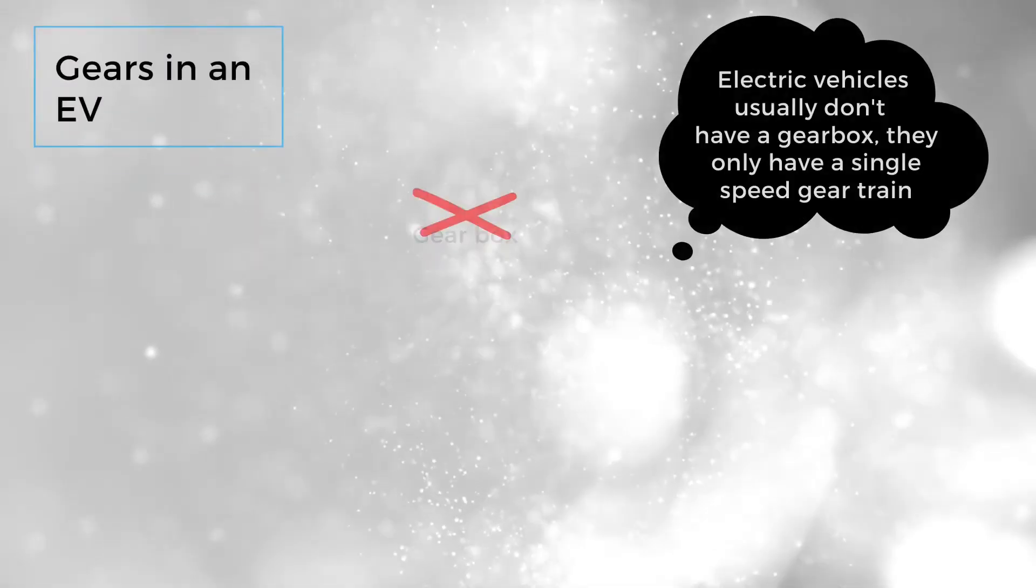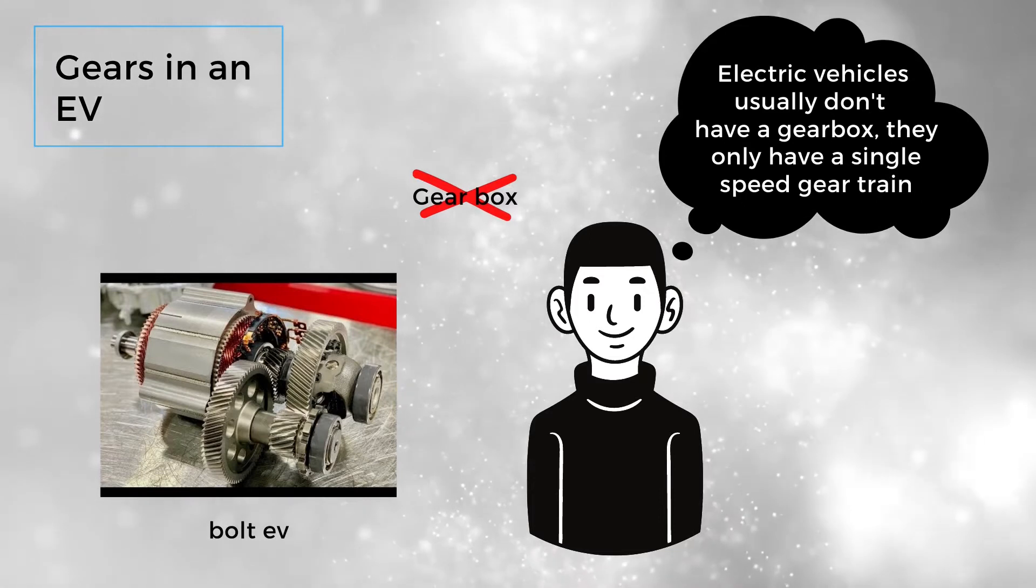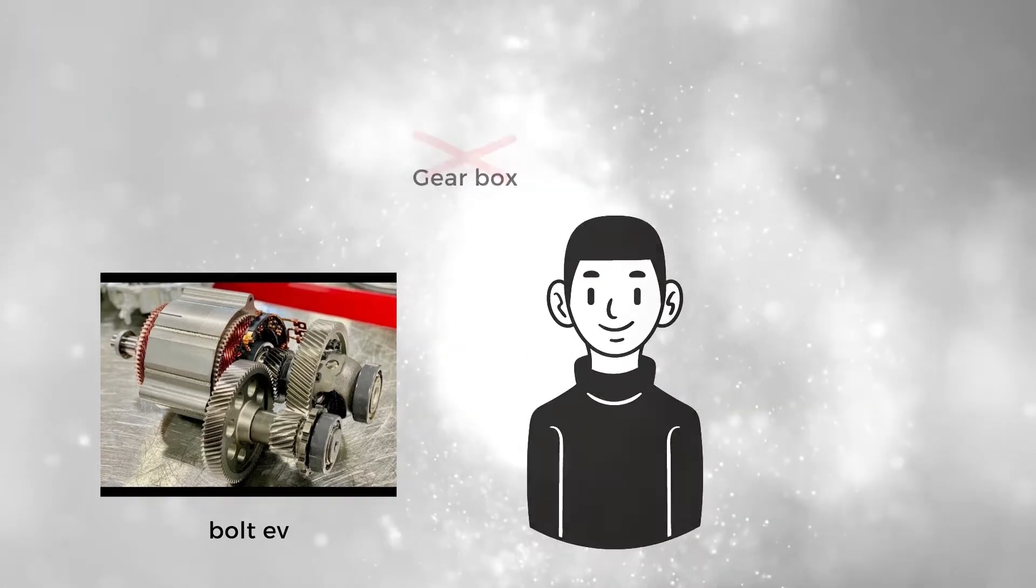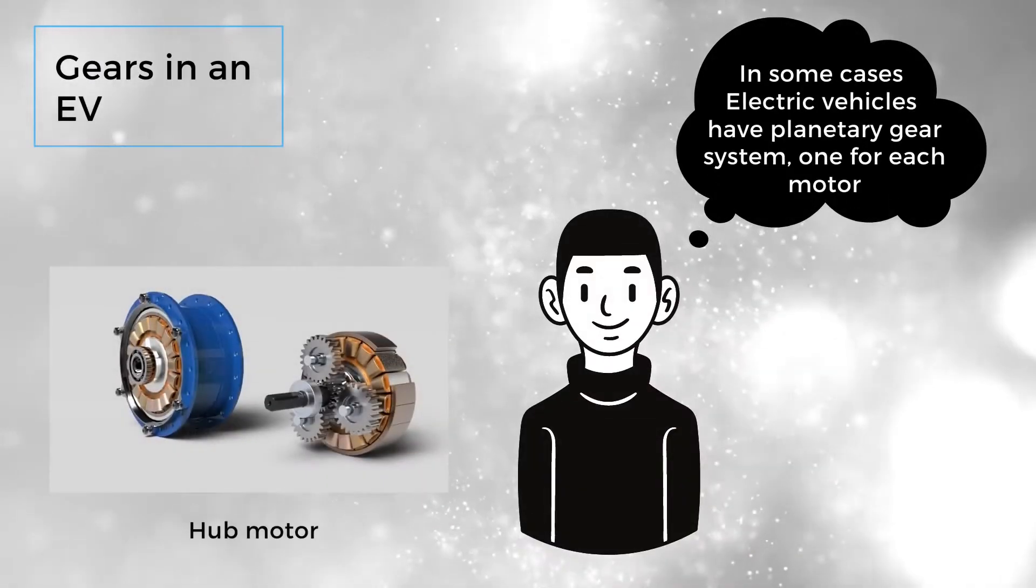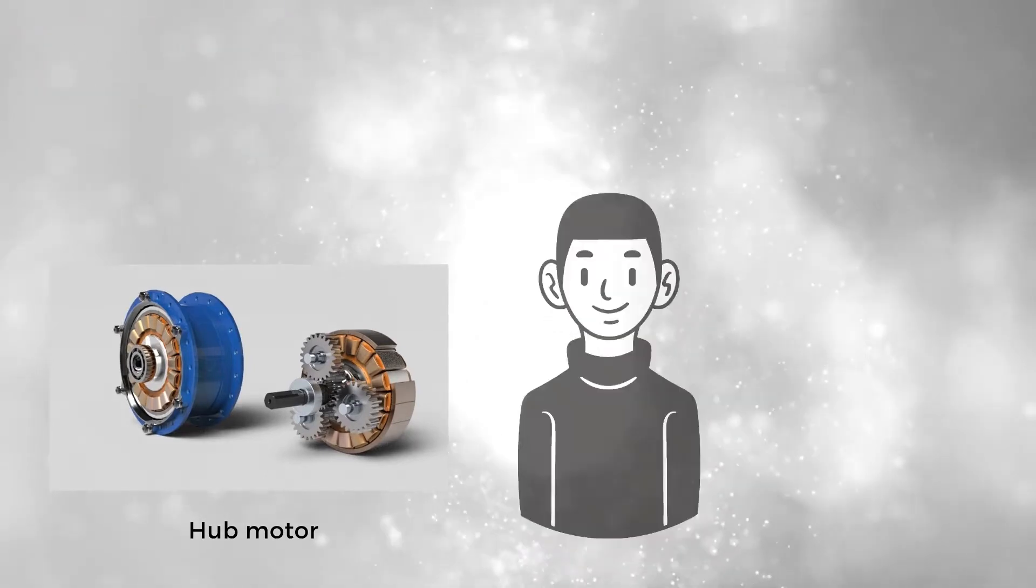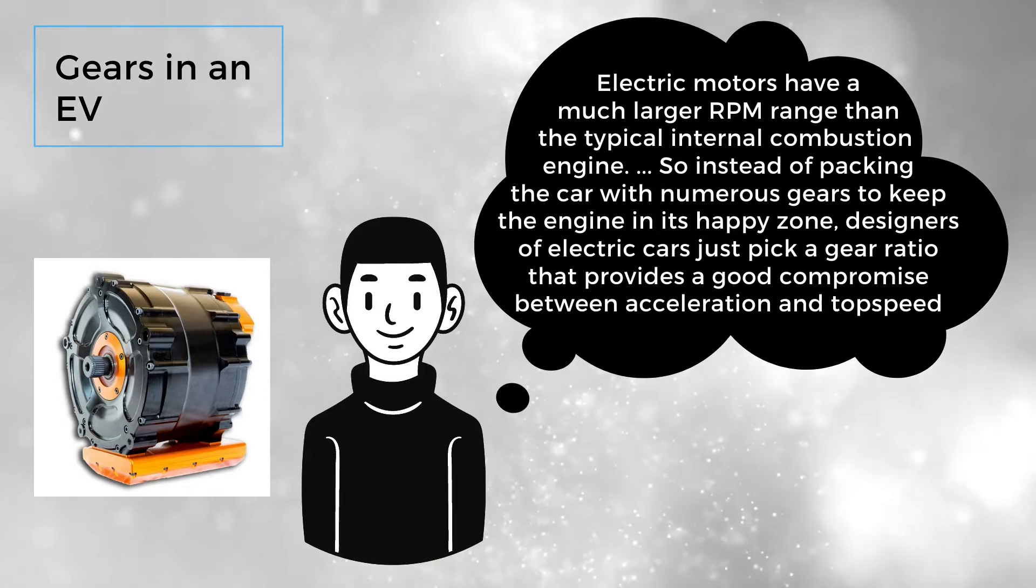Electric vehicles usually don't have a gearbox. They only have a single speed gear train. In some cases, electric vehicles have a planetary gear system, one for each motor.